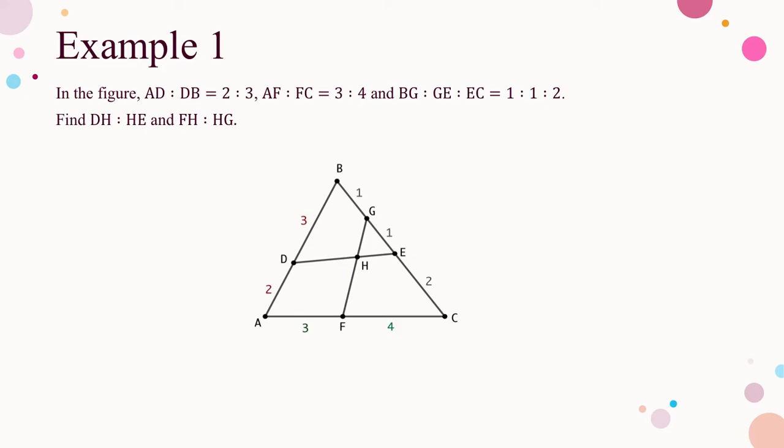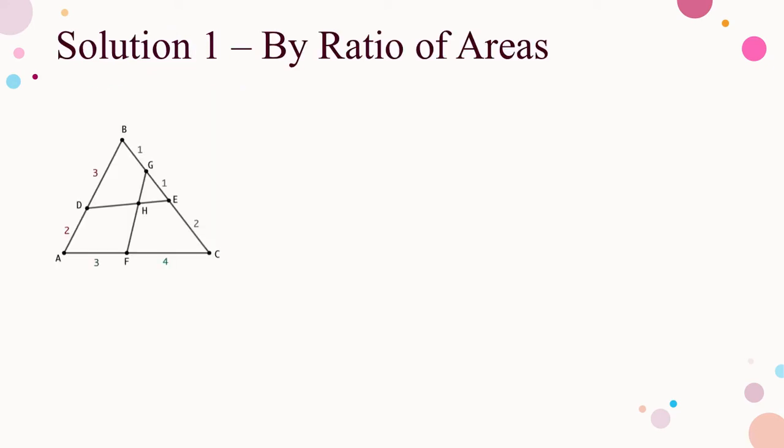This example is the problem I left in my previous video. Did you solve it? By what method? Let me do it by ratio of areas first. Let DH to HE be R to 1, and FH to HG be S to 1, and area of GHE be A.